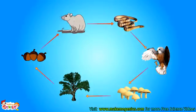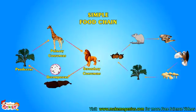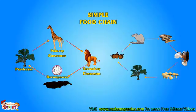Let us see another food chain. Here, a rat eats acorns fruit, which comes from a plant. And a snake eats rats. An eagle eats the rat. The eagle dies, it gets decomposed, and plants use the decomposed nutrients to produce fruit. Food chains which have one producer, one primary consumer, and one secondary consumer are called simple food chains.